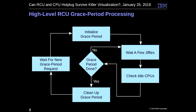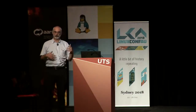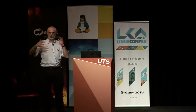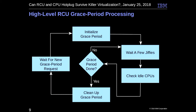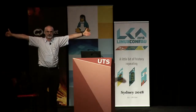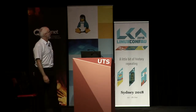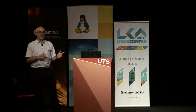Here's a cartoony high-level diagram of RCU grace period processing. Starting on the left in the idle state, RCU waits for a request for a new grace period — for example, 'I just removed something, I need to wait for all the readers to be gone.' Once a request arrives, it initializes the grace period: sets up which CPUs need to respond, then enters an inner loop where it waits a few jiffies and checks idle CPUs.